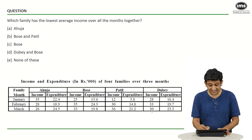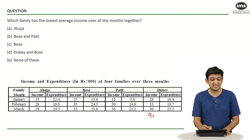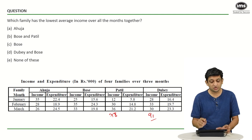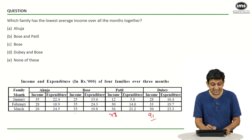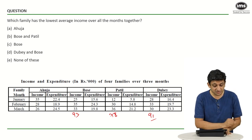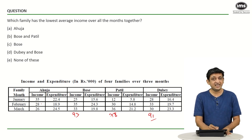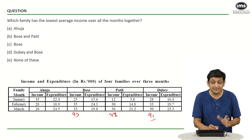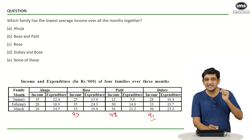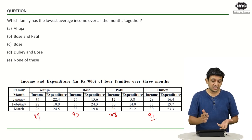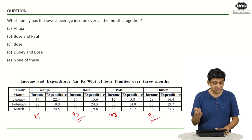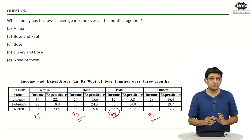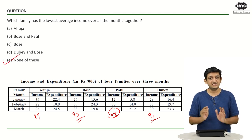Dubey's total income is 91. For Patil: 36 plus 30 plus 12 is 78. So Dubey's 91 is higher than Patil's 78. For Bose: 35 plus 33 is 68, plus 25 is 93 — Bose overtakes Dubey. For Ahuja: 35 plus 28 is 63, plus 26 is 89. So the totals are: Dubey 91, Patil 78, Bose 93, Ahuja 89. The lowest average income is Patil's. Since Patil is not among the listed options, the correct answer is 'none of these.'